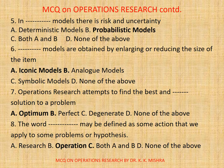Question 6. Dash Models are obtained by enlarging or reducing the size of the item. A, Iconic Models. B, Analog Models. C, Symbolic Models. D, None. Correct option is A, Iconic Models.